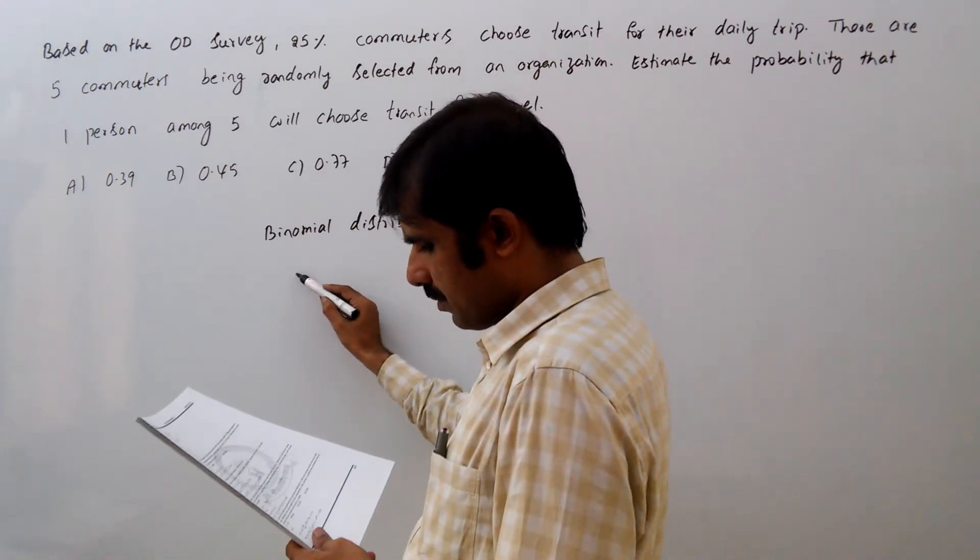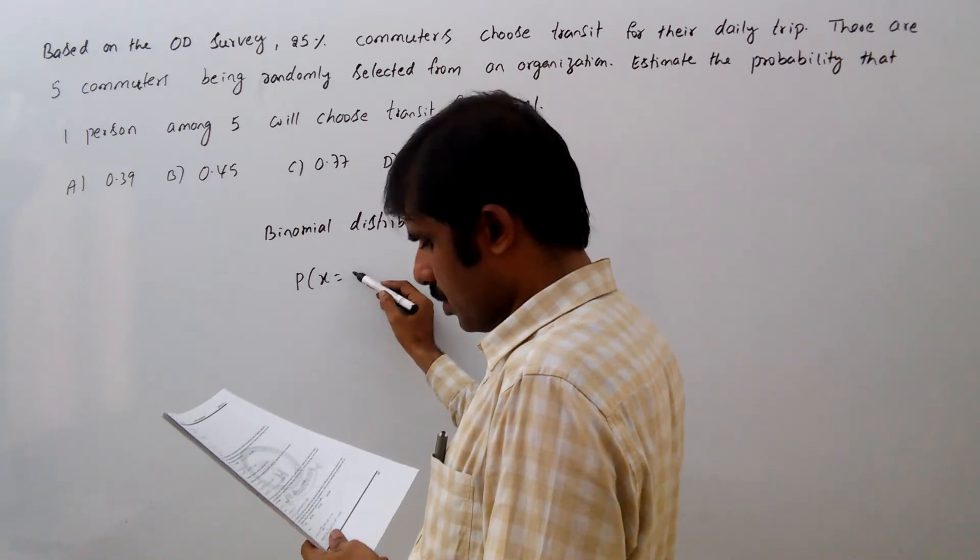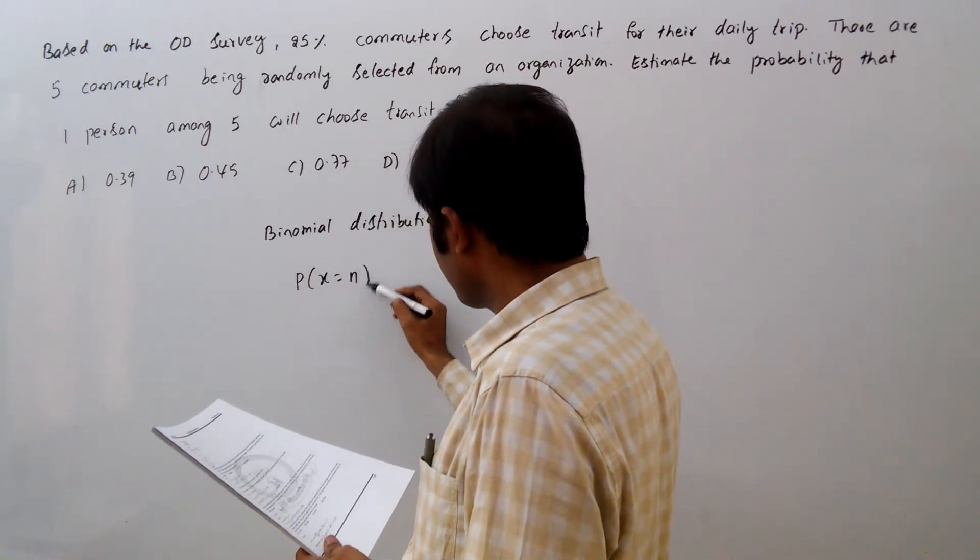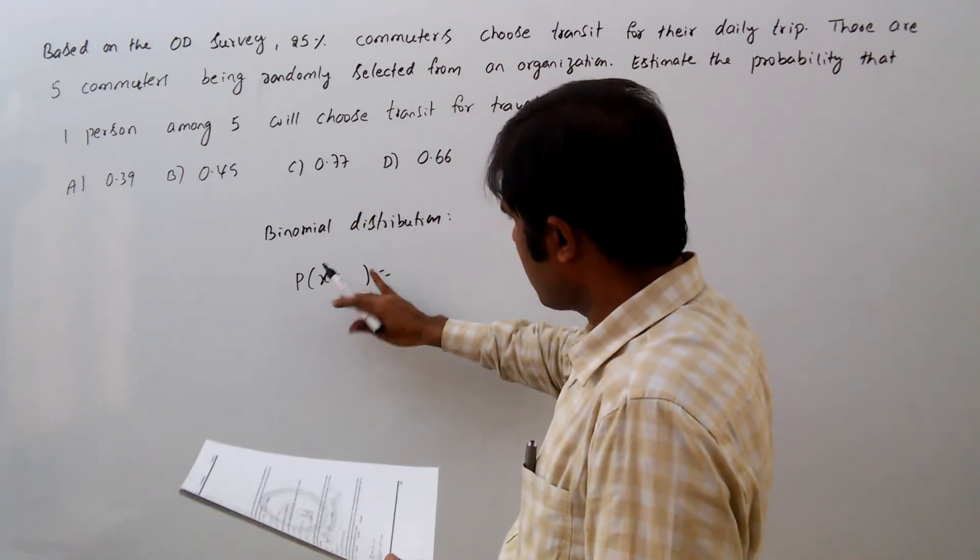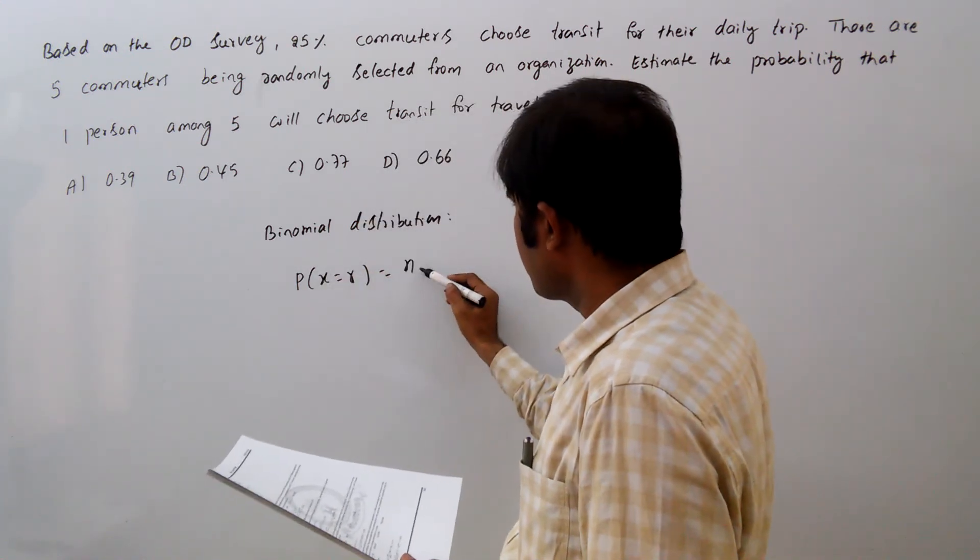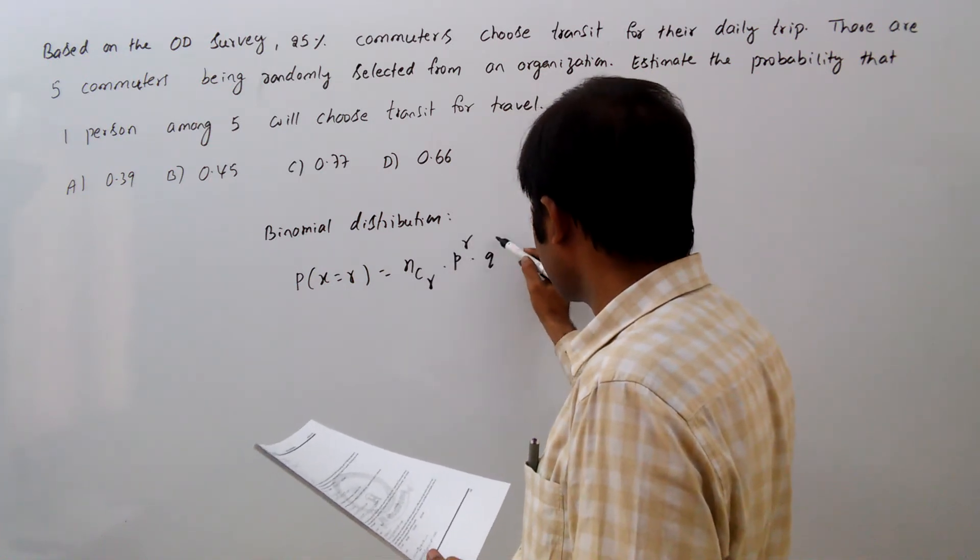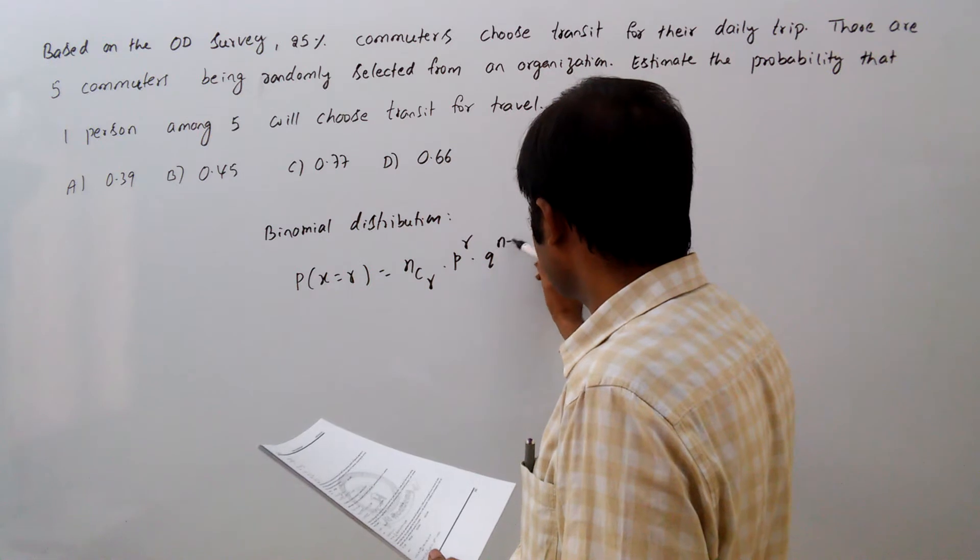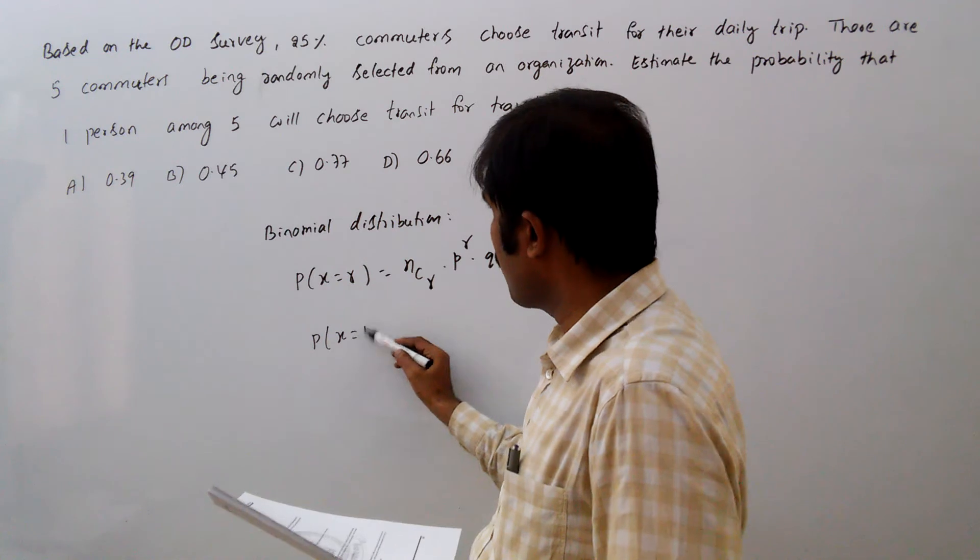Here probability of X equal to R equals nCr times p power r into q power n minus r. This is the formula for probability of X equal to R.